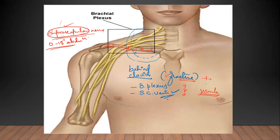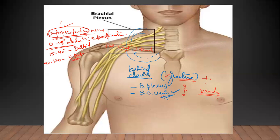If suprascapular nerve is damaged, the person will not be able to do even slight movement of the arm. They usually support it with the other arm and push it — once it goes to 15 degrees, deltoid takes over from 15 to 90 degrees. Abduction from 90 to 120 degrees is done by serratus anterior. Abduction of the arm is very important for USMLE.